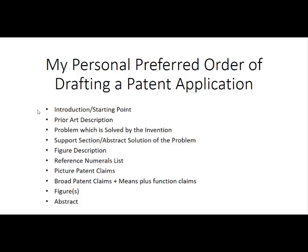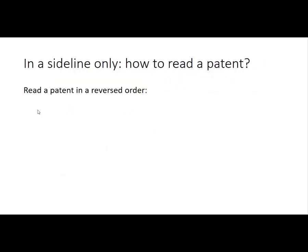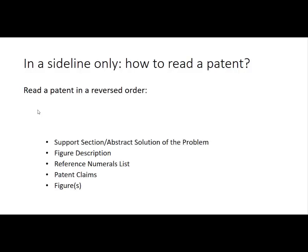Very often the problem is so easy that it can also be done mechanically by a robot. In a sideline only: how to read a patent. My recommendation is that you read the patent in a reversed order. You start with the figures, then you read the figure description, and if a reference numerals list is not there, you do your own — this is very helpful for understanding the invention. The next thing is to read the patent claims and the support section, which gives a link between the figure description and the abstract description in the patent claims. Only then can patent claims be understood properly.